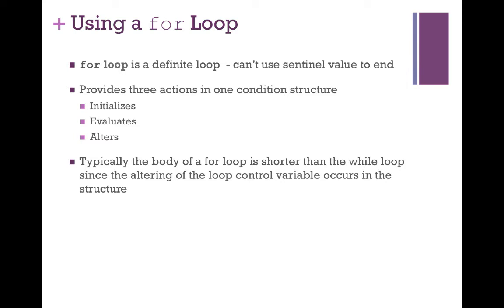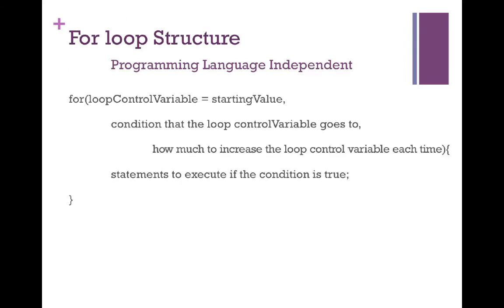The for loop statement provides you with three actions in one compact statement. In a for loop declaration statement, it allows a loop control variable to be declared and initialized, evaluated, and altered. Usually the body of a for loop is shorter than a while loop because the altering of the loop control variable happens inside that first line of the for loop, versus inside the body of a while loop.